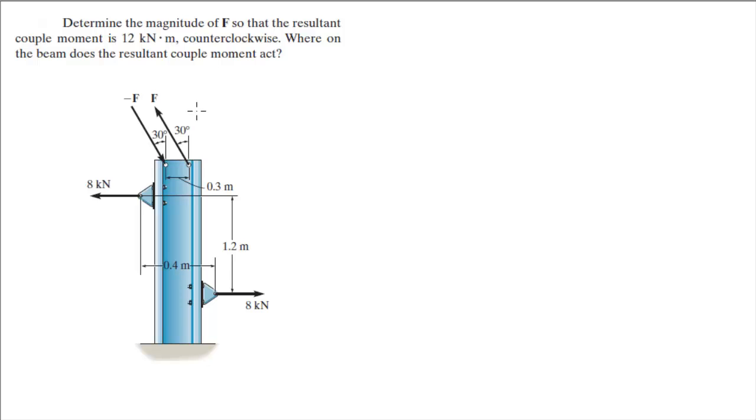Alright guys, let's do this very easy problem where they want you to find the magnitude of F so that the resultant couple moment is 12 kilonewton meters counterclockwise and where on the beam the resultant couple moment acts.